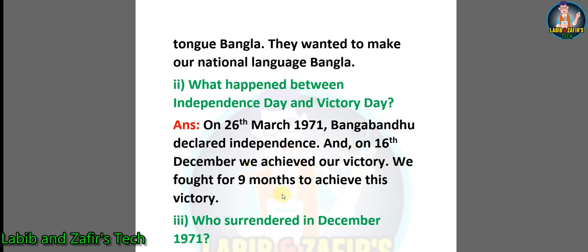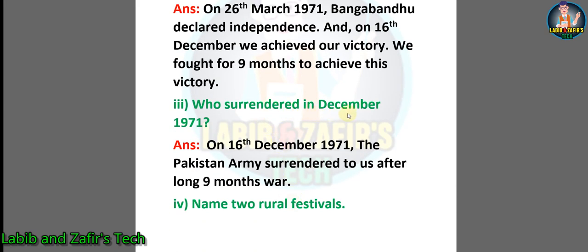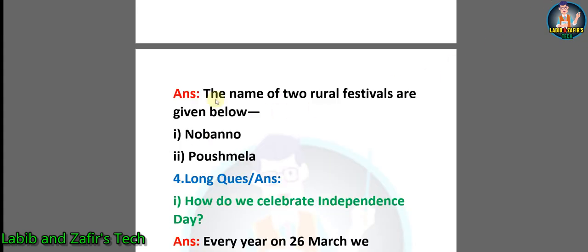Who surrendered in December 1971? Answer: On 16th December 1971, the Pakistan army surrendered to us after a long nine months of war. Number four: name two rural festivals. Answer: The names of two rural festivals are — number one: Nobarno, and number two: Poush Mela.